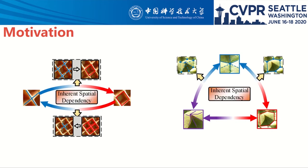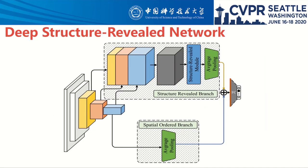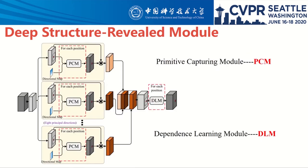This dependency can serve as a structural representation of a texture image. The overall architecture of our proposed method is illustrated here. Our network consists of two branches: the structure-rebuild branch and the spatial ordered branch. For the DSR module, a Primitive Capture Module (PCM) is devised to generate candidate primitives with their principal directional contents, where deep features are first extracted under the constraint of a deep directional map and then encoded by the similarity of the neighborhood. These candidates are then associated by a Dependency Learning Model (DLM) to generate the structural representation, in which a two-way collaborative relation model is introduced to perceive the spatial dependencies among candidate primitives.